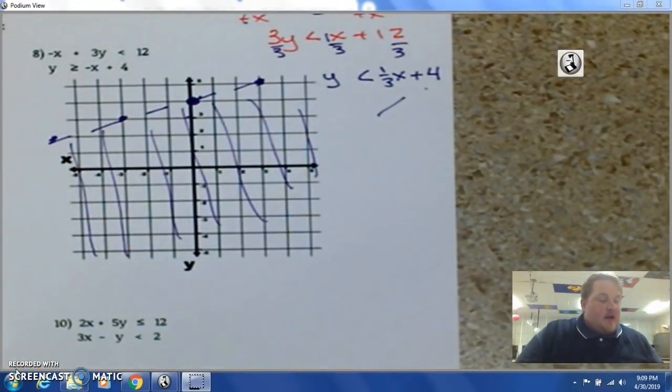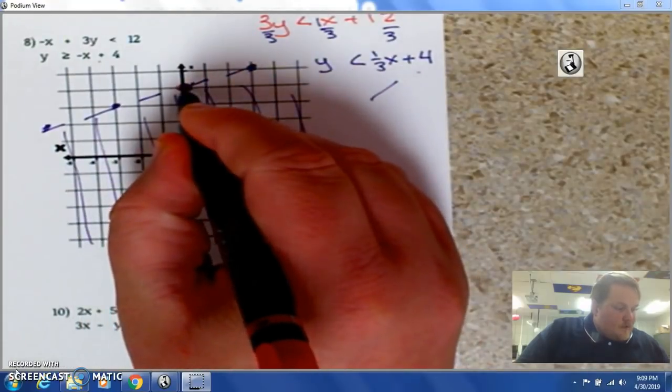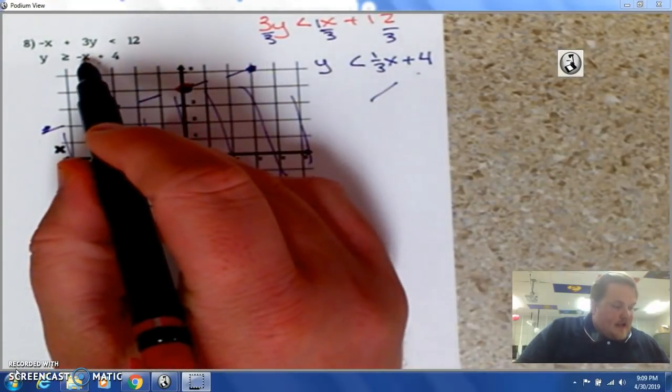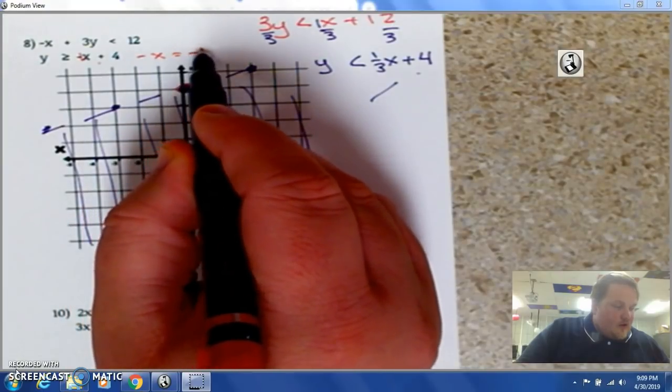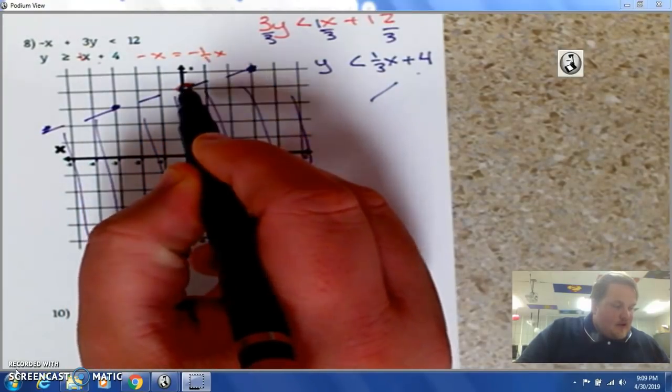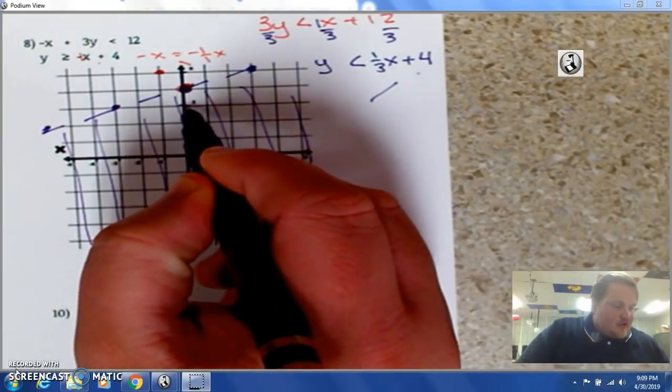So, my red pen. I go up 2, 4 again. And, this time, it's negative 1. So, you know, negative x is negative 1 over 1. 1x. So, up 1 over 1. It's going to go in the negative direction.